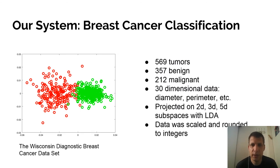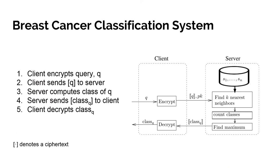As a motivational example, we built a system for classifying breast tumors using breast tumor data from the Wisconsin dataset. The data was originally 30-dimensional with floating point numbers, projected onto various dimensions and rounded to integers. In our system, the database was held by one party called server, for example a hospital, and the client, for example a clinic, wanted to classify a query tumor without the server learning anything about the tumor or the client learning anything about the database. The client encrypts her query, sends it to the server, which homomorphically finds the K nearest neighbors and majority class, and sends that class back for the client to decrypt.